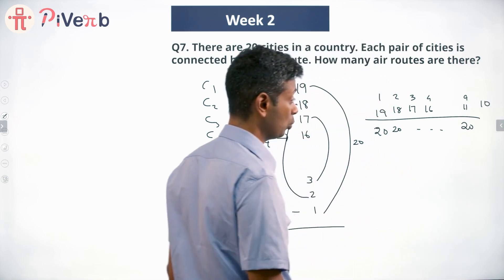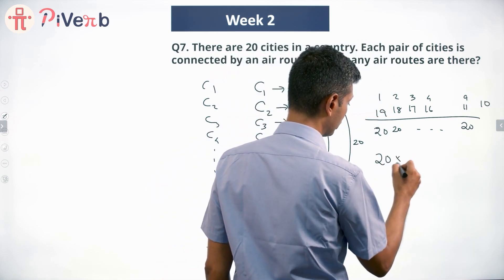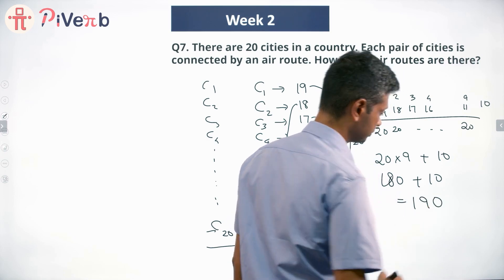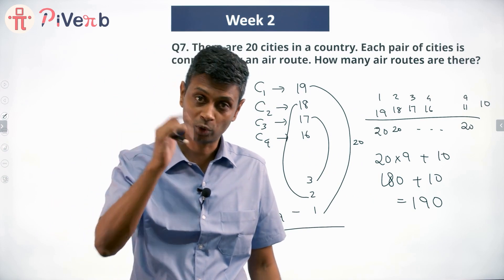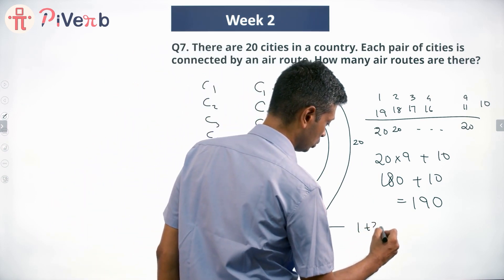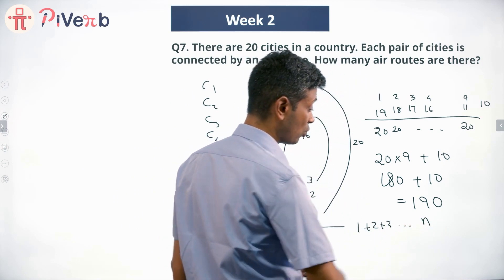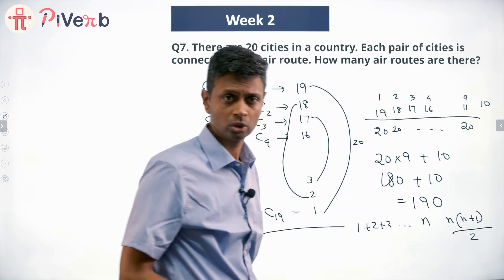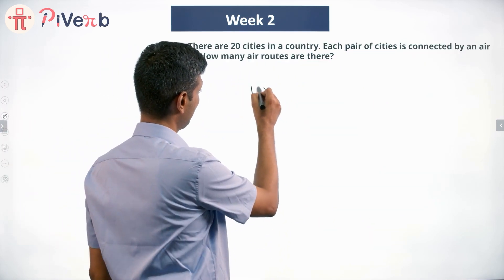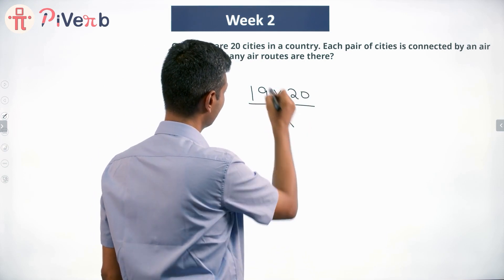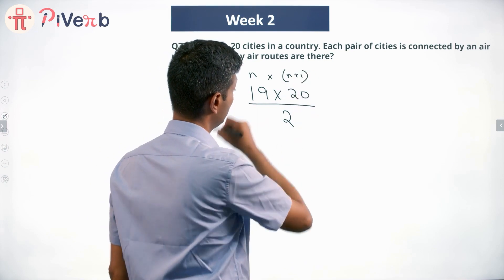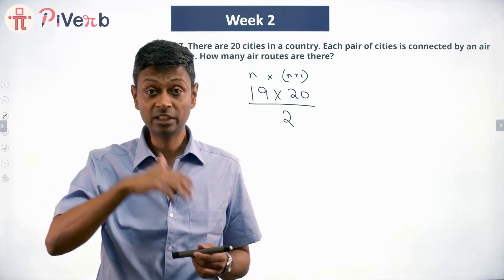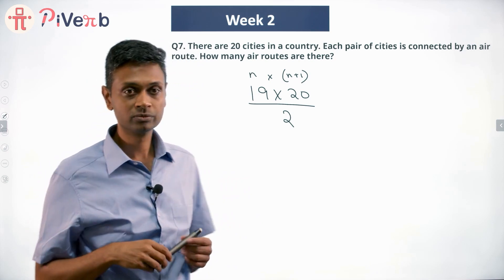Finally there is also the 10 left over. So the total is 20 × 9 plus 10, which is 180 + 10 = 190. There's also a beautiful formula for this: the sum of all natural numbers from 1 to n is n(n+1)/2. So the sum from 1 to 19 is 19 × 20 / 2, which gives 190.